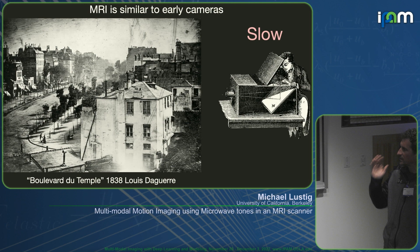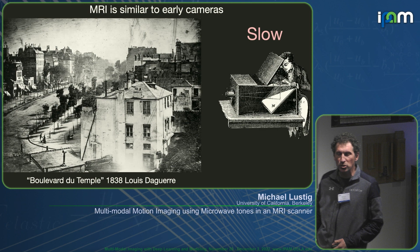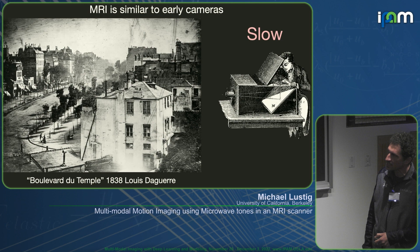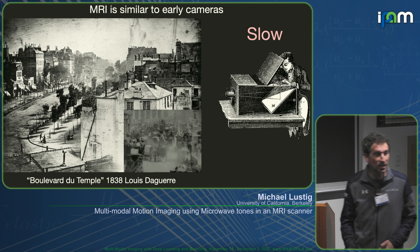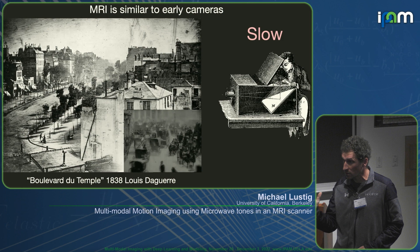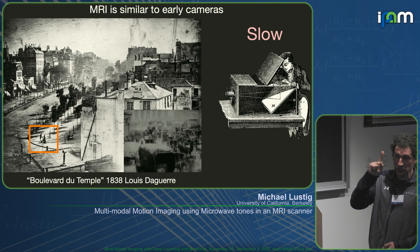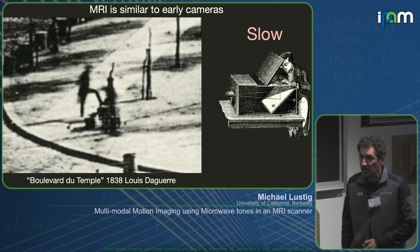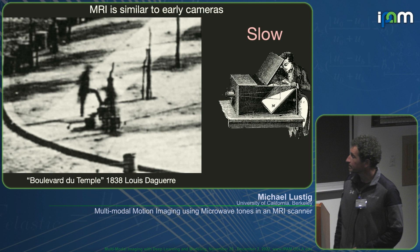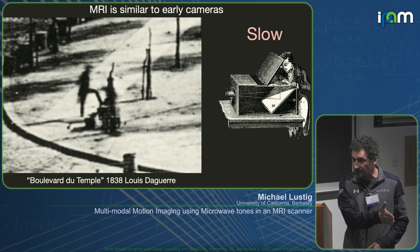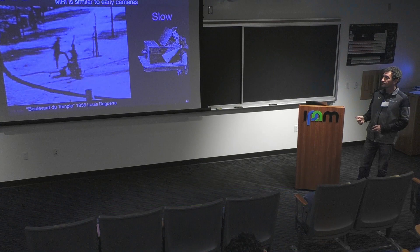MRI is kind of similar to early cameras — very slow. This is one of the earliest photographs of a person, from 1838. It's a picture of a street at midday, and what's missing are all the carriages and people moving around, because this image was acquired over about 30 minutes to an hour of exposure time. You can see one person because they got their shoe shined for about 15 minutes and stayed still. This is really what MRI is — you are required to stay still, otherwise you can't observe everything.